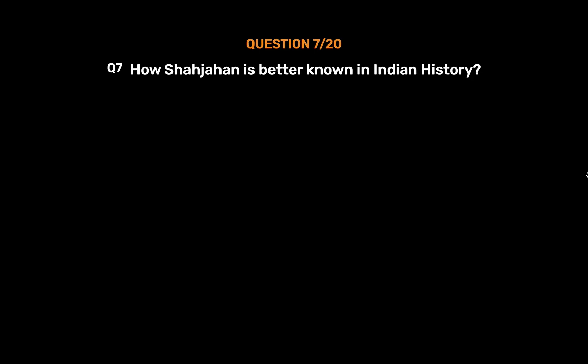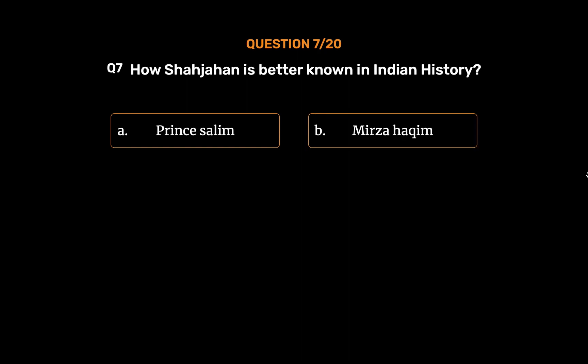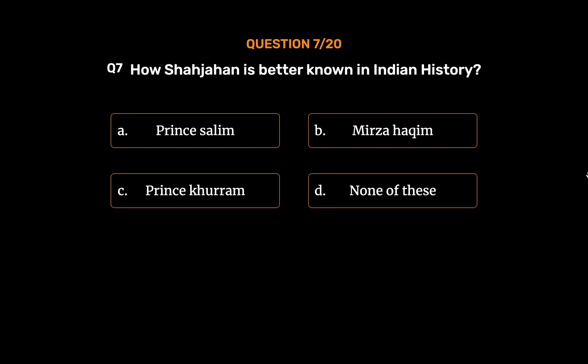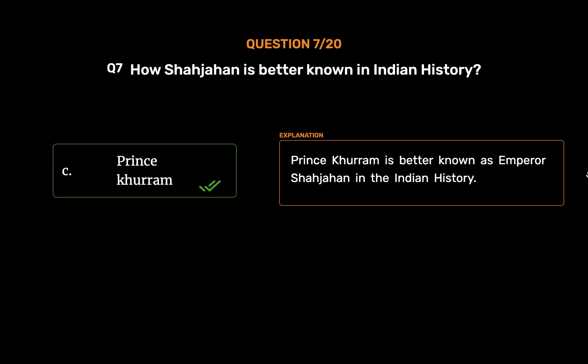Question 7: How is Shah Jahan better known in Indian history? Option A: Prince Salim. Option B: Mirza Hakim. Option C: Prince Khurram. Option D: None of these. The correct answer is Option C, Prince Khurram. Prince Khurram is better known as Emperor Shah Jahan in Indian history.